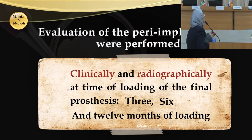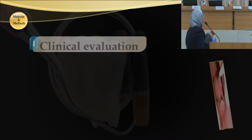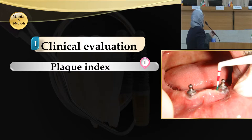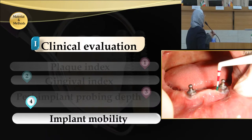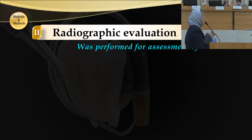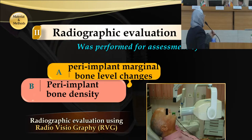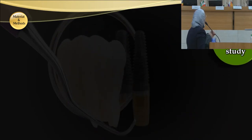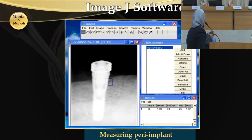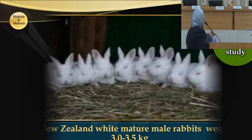Evaluation of the peri-implant tissues: clinical evaluation consisted of plaque index, gingival index, peri-implant probing depth, and implant mobility. Radiographic evaluation was performed for the assessment of peri-implant marginal bone height and peri-implant bone density using RVG. MHG software was used for measuring peri-implant marginal bone height and bone density.